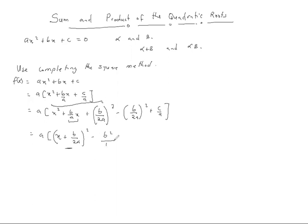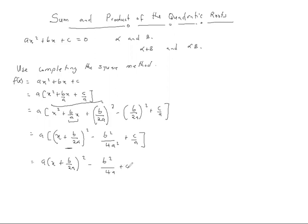We have b squared over 4a squared plus c over a, so that if we expand throughout, we get a times the quantity x plus b over 2a squared, minus b squared over 4a, plus c.